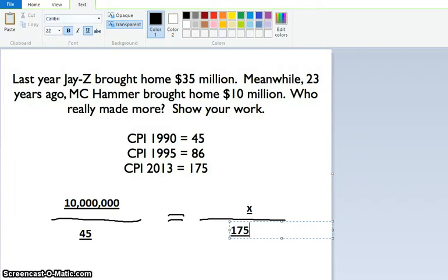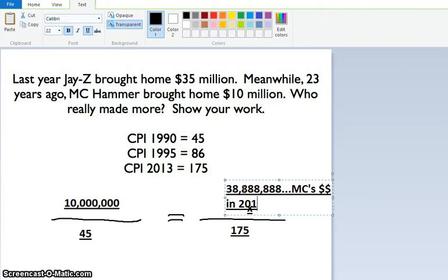And hopefully, if I set this up right and did this correctly, we're going to get some good answers here. And my answers are $38 million, $888. Okay, and so this is MC Hammer's, actually, MC's money in 2013.